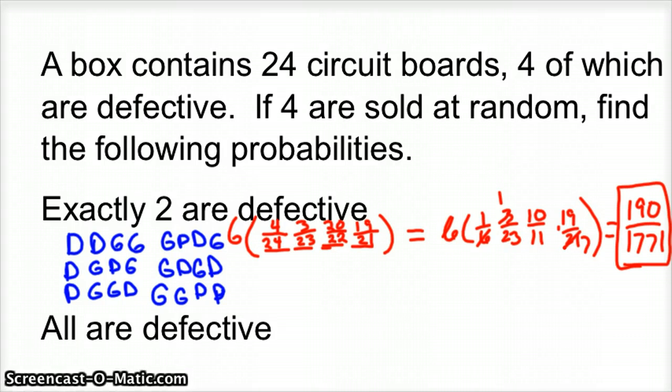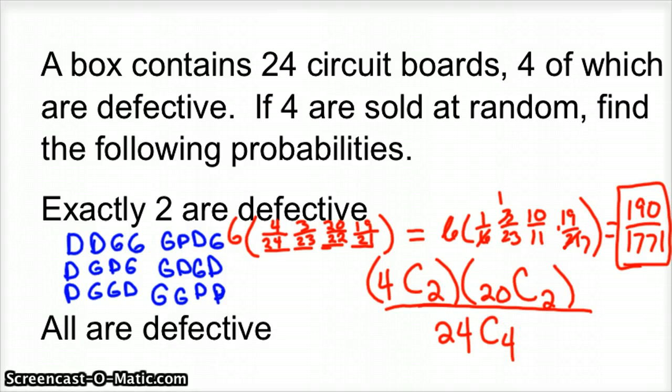Looking at it as successes over total, we're going to choose out of four defective ones, we're going to choose two of them. And out of the good bin, we're going to take that times 20 good ones. We're going to choose two bad ones out of the four that are there. And then for the good ones, we're going to choose out of 20, we're going to also choose two. Multiply that over total possibilities. Out of the box there's 24 in the box and we're going to choose four of them. And you do the math, get your calculator out, and you will get the same thing.